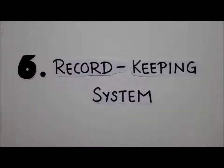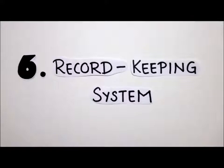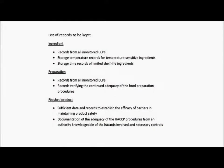The sixth principle is establishing a record-keeping system. An effective record-keeping system needs to be established to ensure that the system is strictly complied with. Also, having a good record-keeping system will allow everything to be better accounted for should there be a major incident like serious contamination. In every step of the process, there must be sufficient records kept. This picture shows a list of records that we will be keeping for our food process.